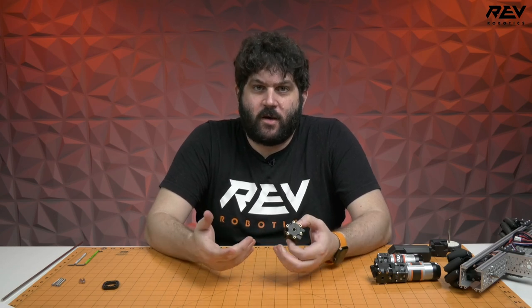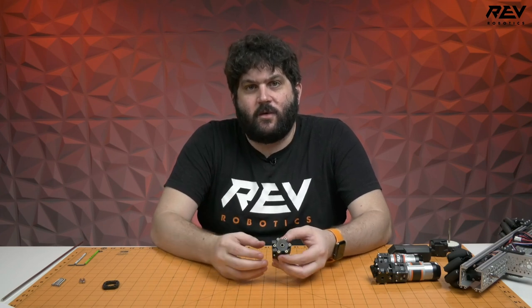This gearbox is an extension of our ultra planetary gearbox system, but it can also be used independently. Its purpose is to give you a 90 degree output to your gearbox so that you can build in tighter spaces and adds new functionality for FTC teams that you've never had before.